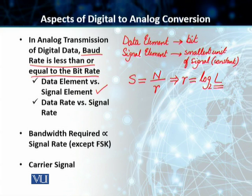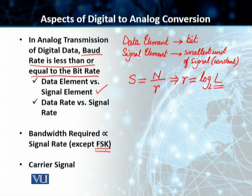Another important concept is that of bandwidth required. In the case of analog transmission, the bandwidth required is always proportional to the signal rate — the more the signal rate, the more the bandwidth required, and the lesser the signal rate, the lesser the bandwidth required — except for the case of Frequency Shift Keying. In FSK, bandwidth is not directly proportional to signal rate because of the difference between the carrier signals in FSK that must be added into the bandwidth calculation.